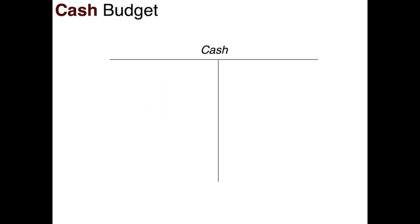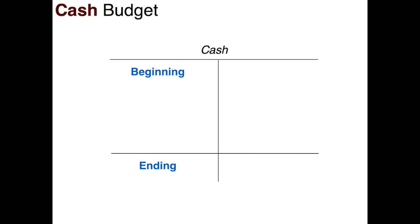To demonstrate the cash budget, let's start with a cash T-account. Cash being an asset carries a debit balance, so we'll have our beginning and ending balances there. Any payments made in cash would be credited to our cash T-account, and if we borrow money or collect money from customers that would make our cash account go up. Each part of this T-account would have its own budget, and we want to start with cash collections.